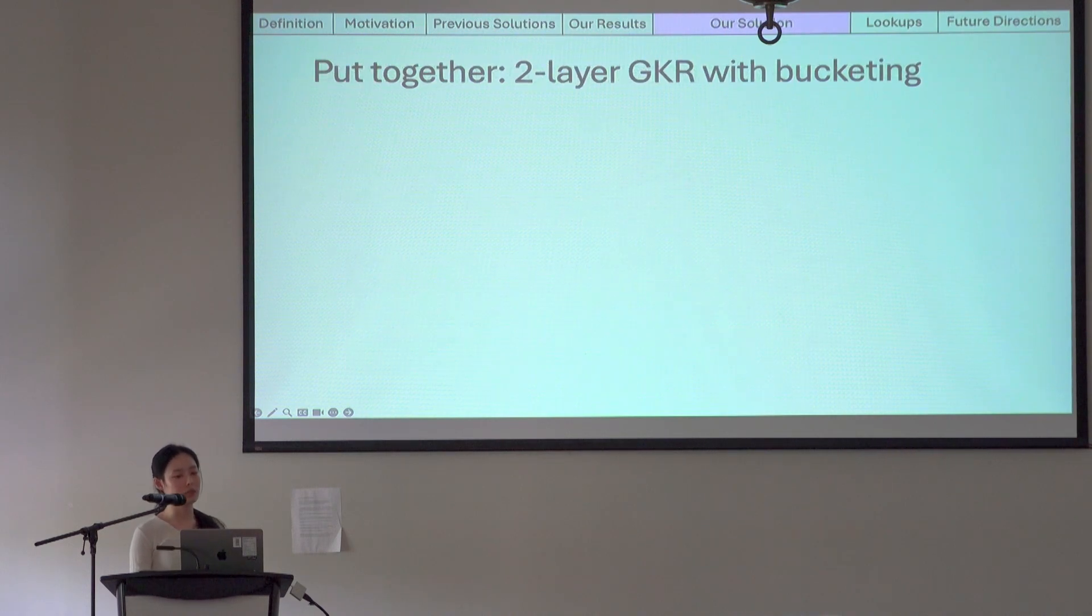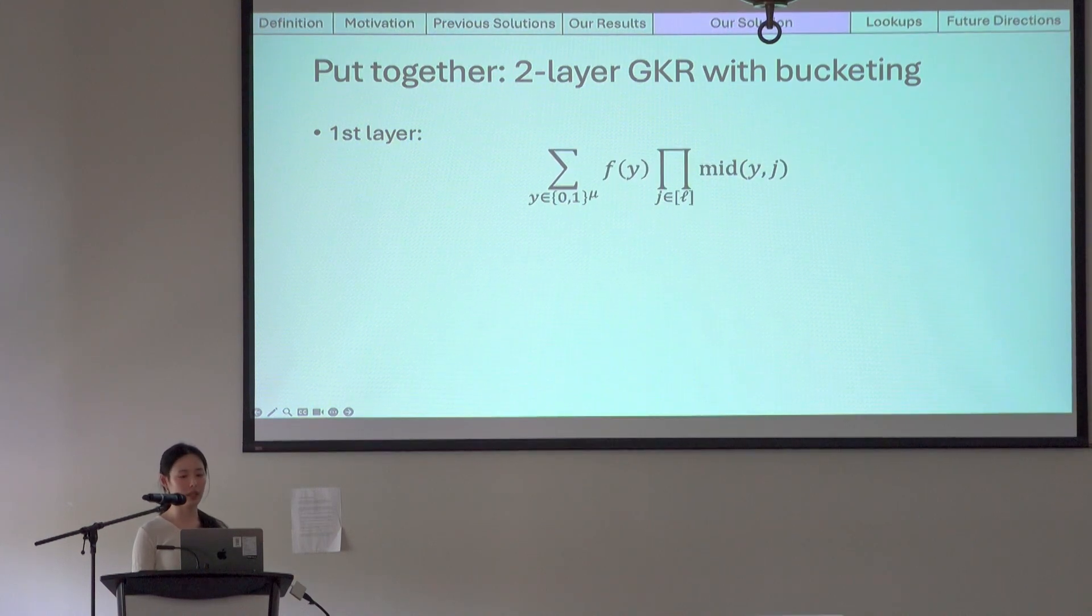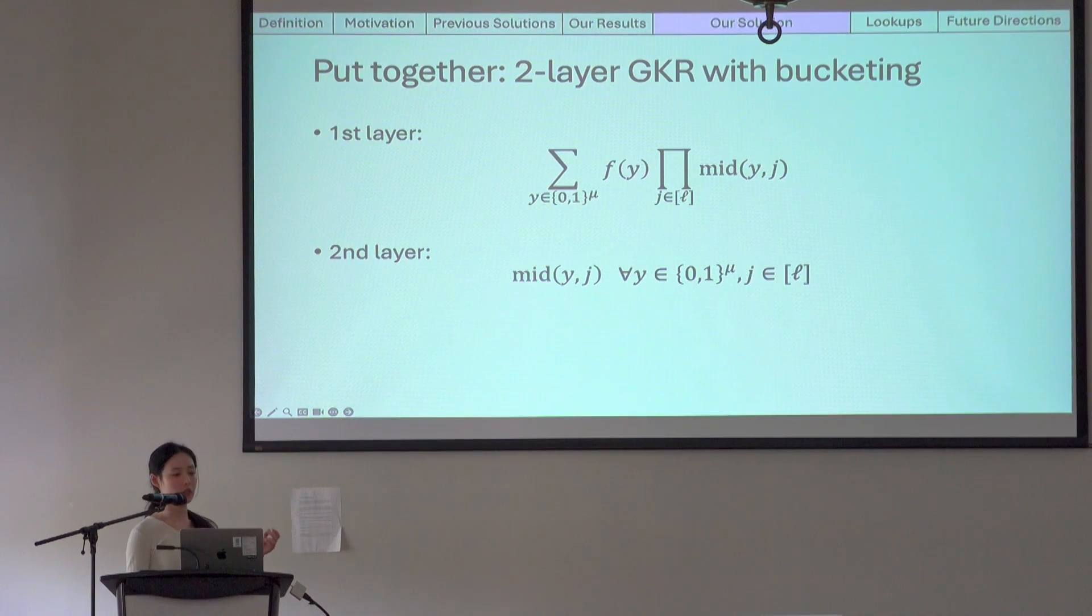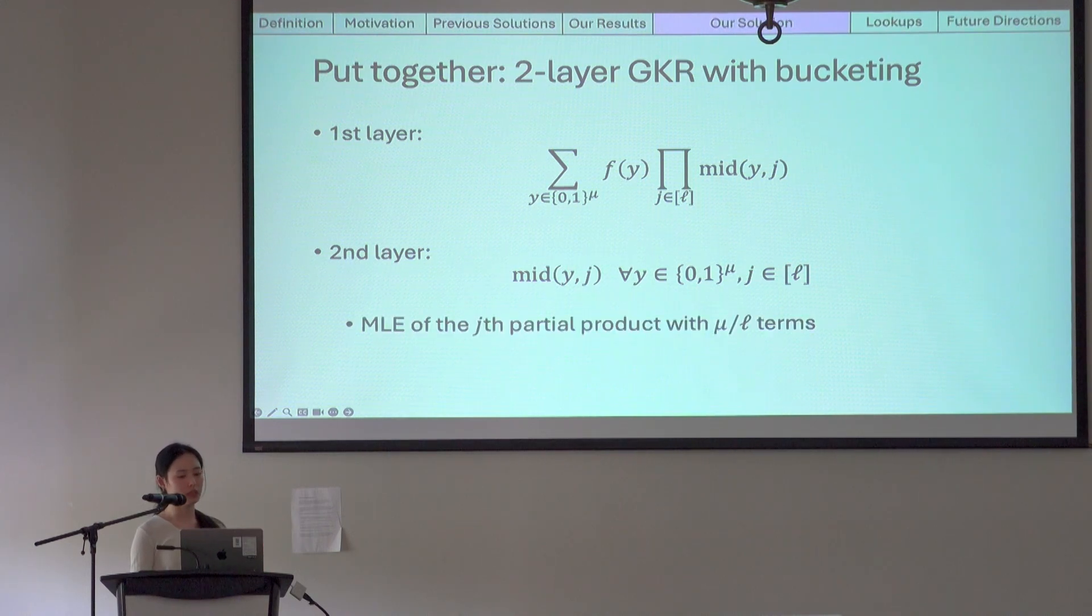To put together, we will use a mini two-layer GKR circuit to prove permutation check, applying the bucketing trick in the process. The first layer computes the equivalence of the basic permutation check, except that we put them into chunks instead of computing the entire EQ product with mu terms. The second layer computes every mid for every Y in the Boolean hypercube and every chunk, so for J from 1 to L. Each mid is a multi-linear extension of the J's chunk, which means it's a product of mu over L terms. The resulting number of field operations is asymptotically n log log n.